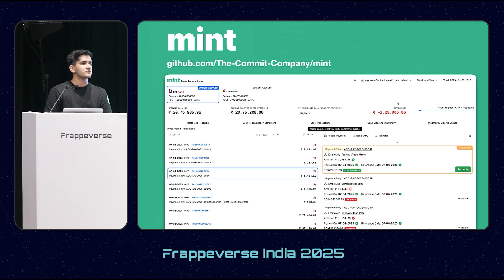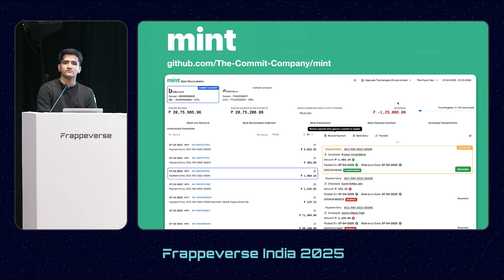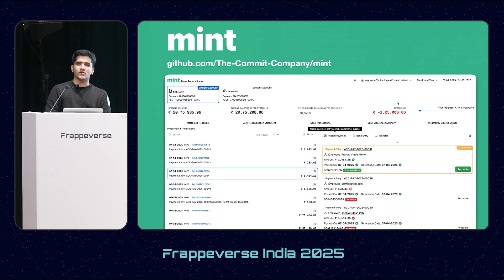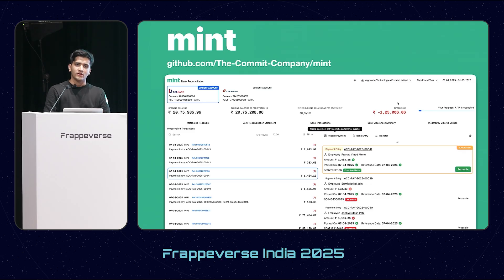Question: If we use Plaid or a direct bank integration, will it automatically fetch transactions here too? Yes - it's the same doctypes. For example, I use it with the Razorpay X integration that Resilient Tech has built. Razorpay X brings in all the transactions automatically, and then I just come to Mint and reconcile.